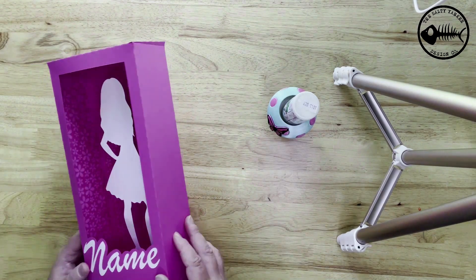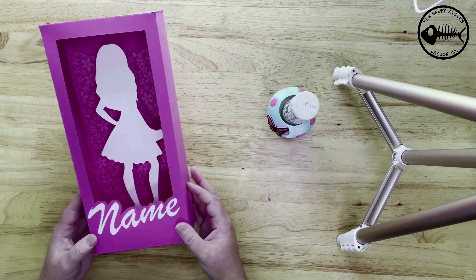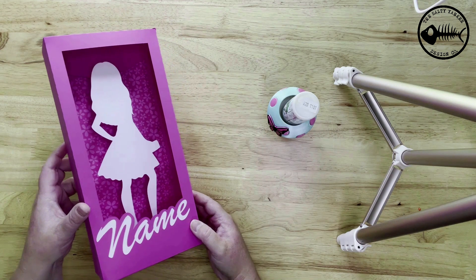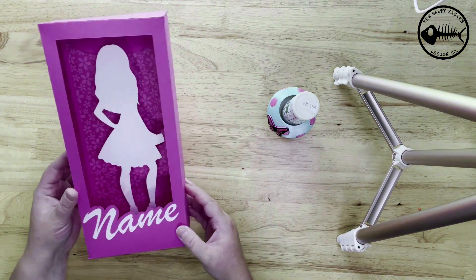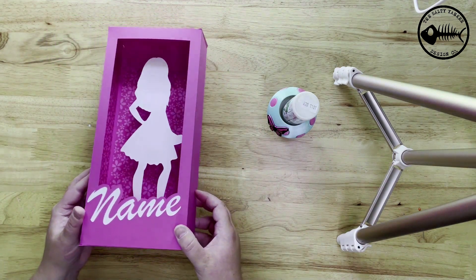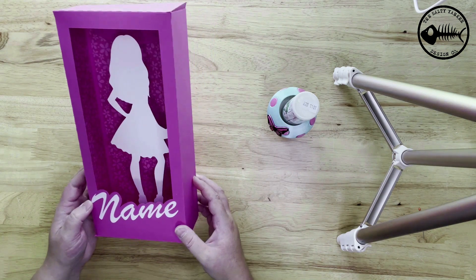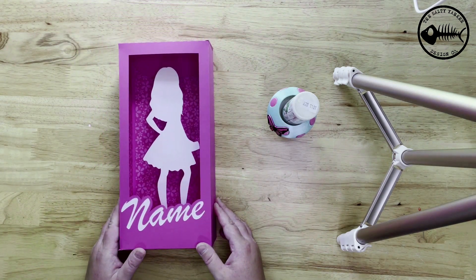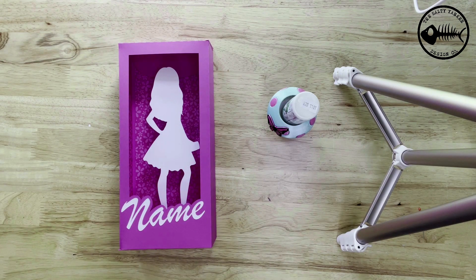And it's finished! Check the links below for some related videos on this project. It does come with another smaller favor box. There is not an assembly video on that one, but it's the same as this one. It's just all in one piece. And you can get this file in the favor box at TheSaltyYankee.com.